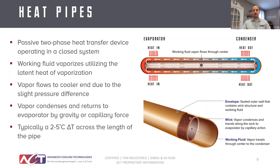Heat pipes are great for situations where you need to spread heat away from the immediate cross-section of your heat generating component, allowing more surface area above the component to dissipate higher powers. Typically heat pipes will see anywhere between two to five degrees C temperature difference from one end to the other, so they are very efficient conductors.